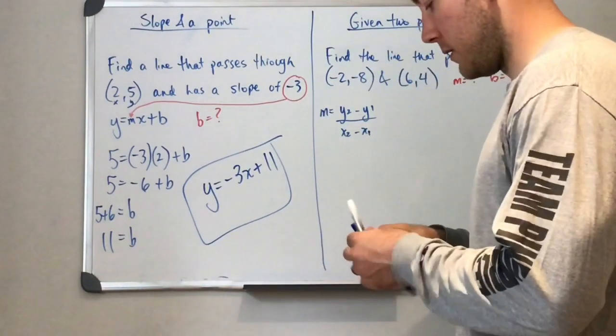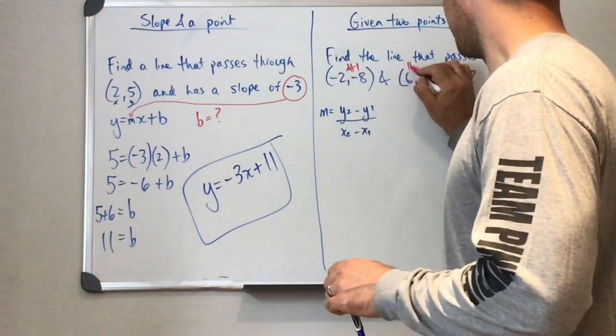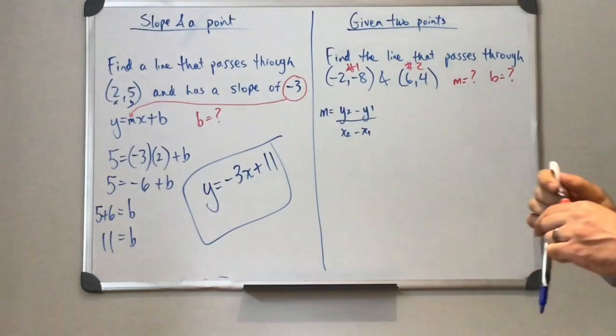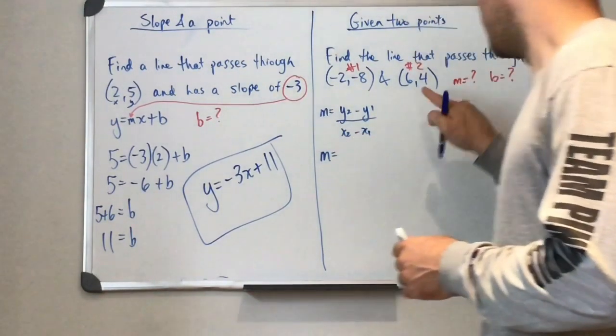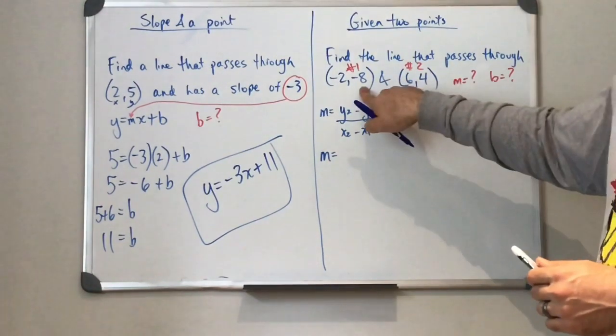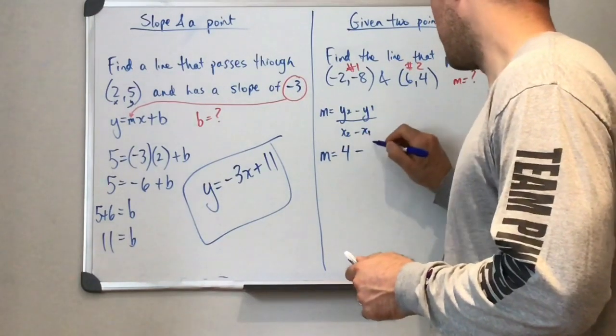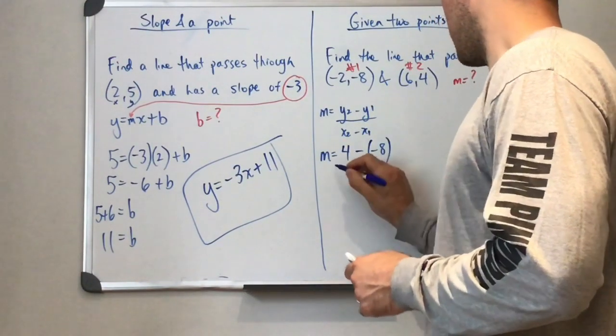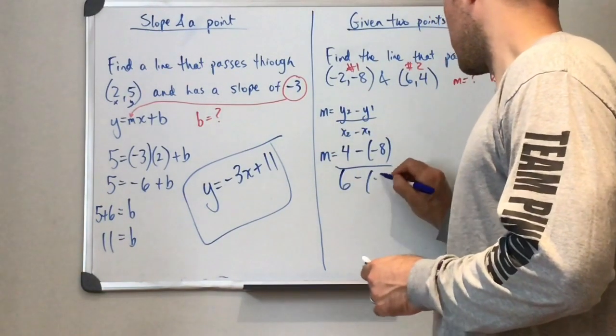Okay. So you might notice these little numbers associated with our variables. I'm going to call this point point number one and this one point number two. So if I'm going to use this equation here, the y from our second point, I'm going to subtract the y from our first point.